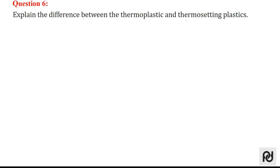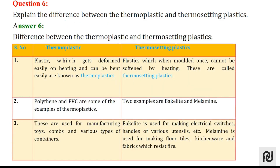Question 6: explain the difference between thermoplastic and thermosetting plastics. The key word is 'set' — once the plastic is set, it cannot be unset. Plastic which gets deformed easily on heating is known as thermoplastic. The plastic which, when moulded once, cannot be softened by heating, is thermosetting plastic. Polythene and PVC are examples of thermoplastics, whereas bakelite and melamine are examples of thermosetting plastics.